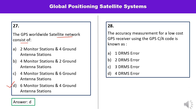Question number twenty-eight: The accuracy measurement for a low-cost GPS receiver using GPS C/A code is known as — 1 DRMS error, 2 DRMS error, 3 DRMS error, or 4 DRMS error? Here DRMS means Distance Root Mean Square error. It uses 2 DRMS error, so the answer is B.